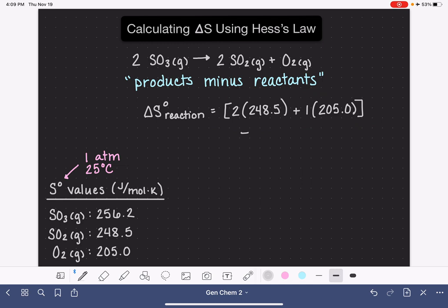And then from that, we're going to subtract for our reactants. We have two of the SO3 molecules, SO3 right here, 256.2. And then if we just do all of the math on this, we're going to end up with 189.6.